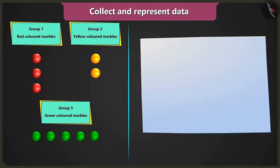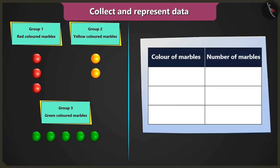Well done. Now create a table like this. Now you have to write the names of the colors — red, yellow, and green — in the column 'color of marbles'.